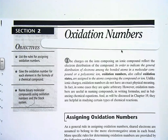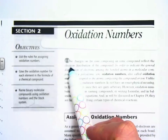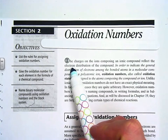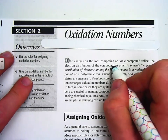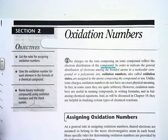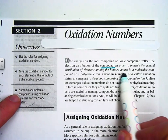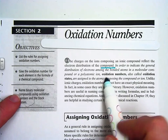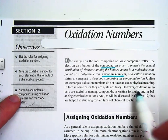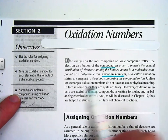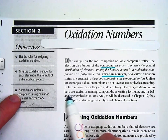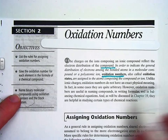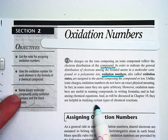Don't just stare at the screen and hope the information will somehow absorb into your brain, because I'm telling you it's not going to. The charges on the ions composing an ionic compound reflect the electron distribution of the compound. That basically means the charges show where the electrons are. In order to indicate the general distribution of electrons among the bonded atoms in a molecular compound or a polyatomic ion, oxidation numbers — vocab word, you should write that down — also called oxidation states, are assigned to the atoms composing the compound or ion. Unlike ionic charges, oxidation numbers do not have an exact physical meaning. In fact, in some cases they are quite arbitrary. However, oxidation numbers are useful in naming compounds, in writing formulas, and in balancing chemical equations. And as it will be discussed in chapter 19, they are helpful in studying certain types of chemical reactions.